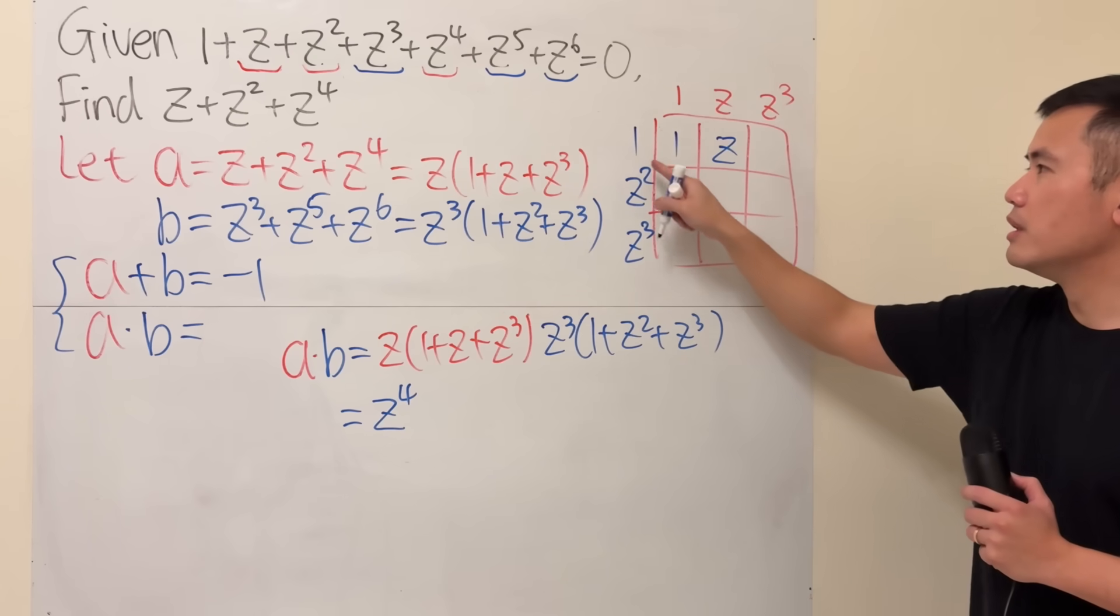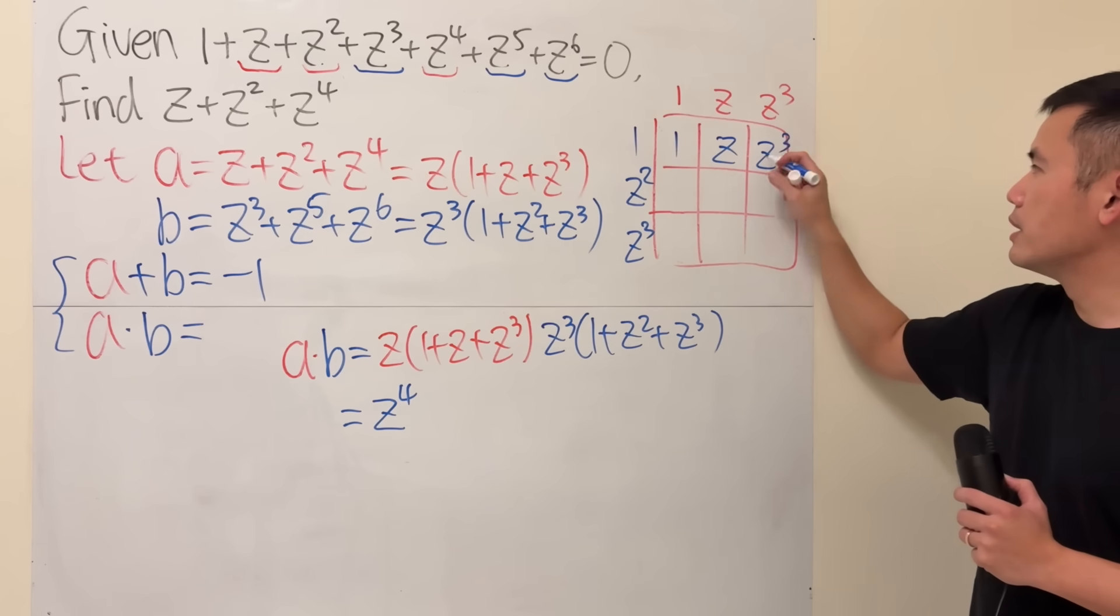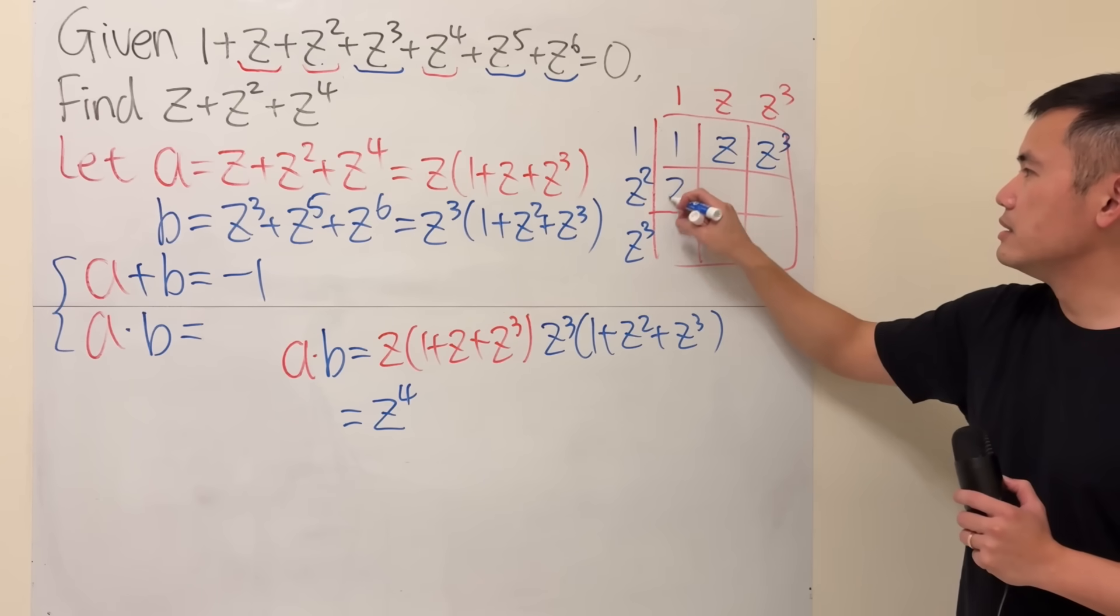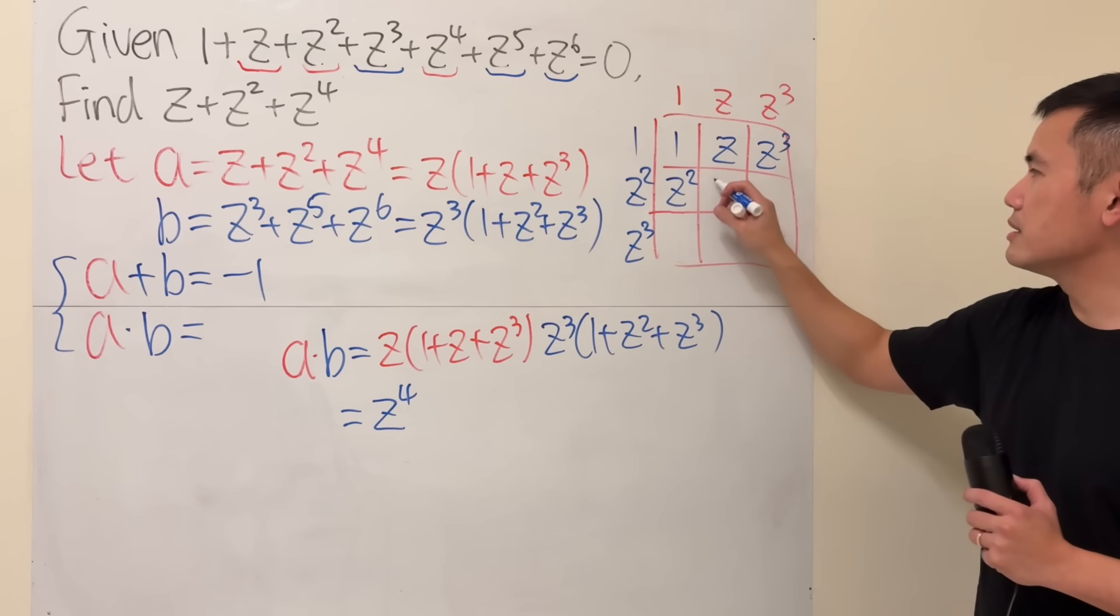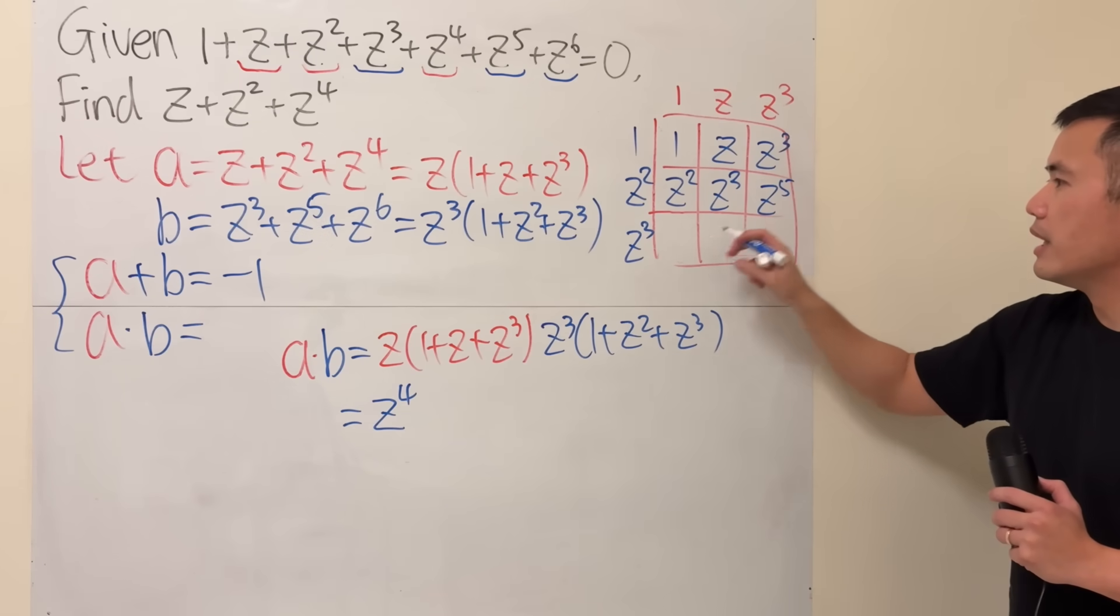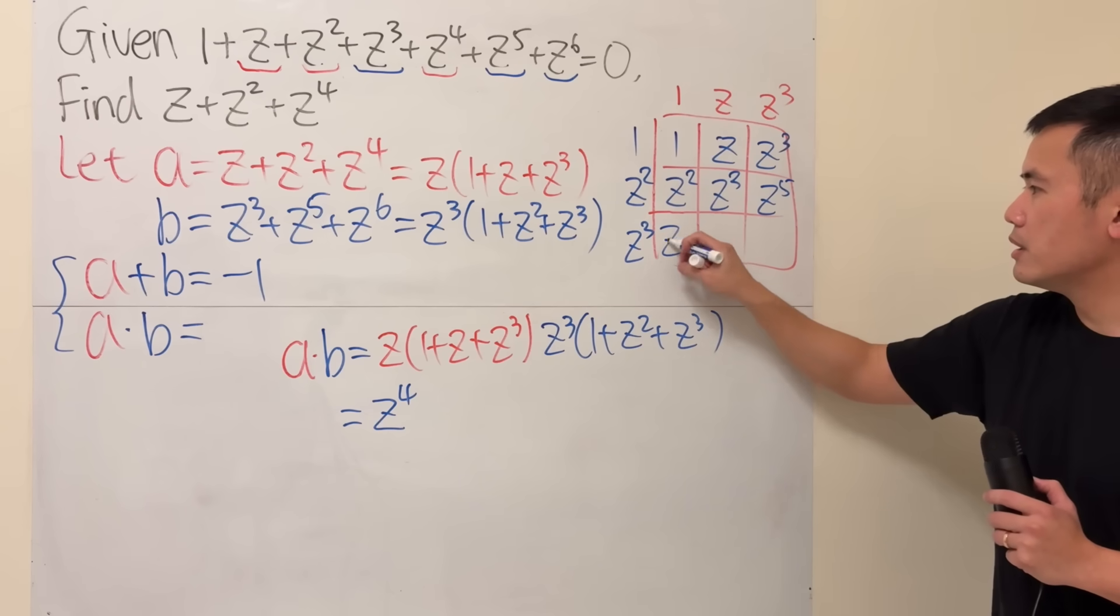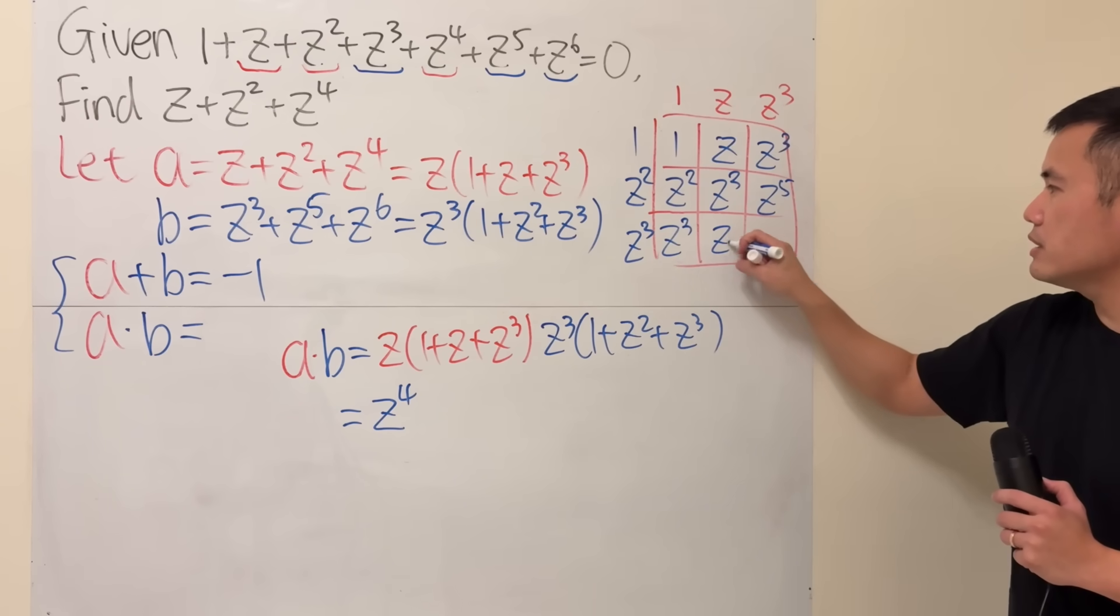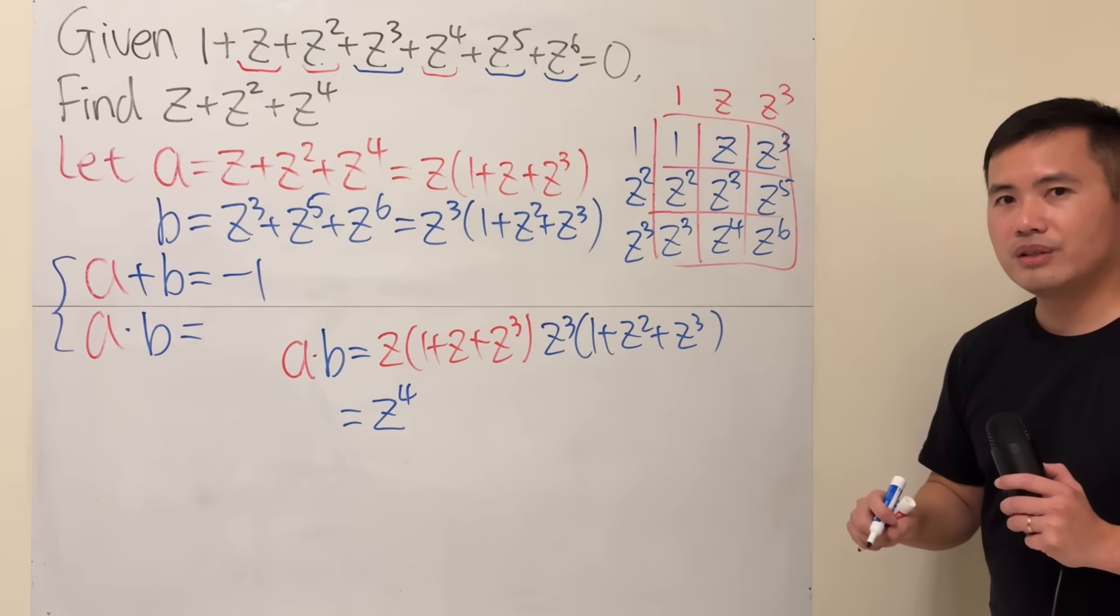I'll just put on blue. And then this box means 1 times z, so it's z. And then just continue the same fashion. So 1 times that is z cubed. This times that is z squared. This times that is z cubed. This times that is z to the fifth. And then this times this is z cubed. This times that is z to the fourth. Lastly, z to the sixth.